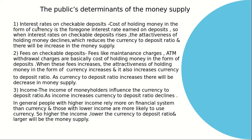Public determinants of money supply. First is interest rates on checkable deposits. Checkable deposits are savings accounts from which we can withdraw anytime. The cost of holding money in the form of currency is the foregone interest earned on deposits. When interest rates on checkable deposits rise, the attractiveness of holding money in currency declines, which reduces the currency-to-deposit ratio and increases money supply. There is an inverse relationship between currency-to-deposit ratio and money supply.